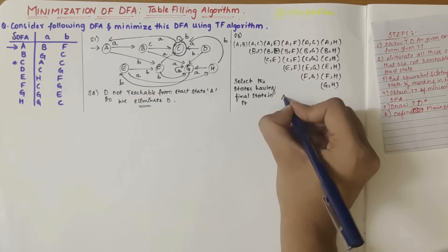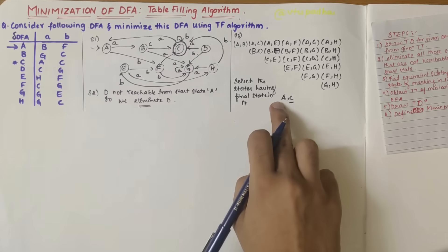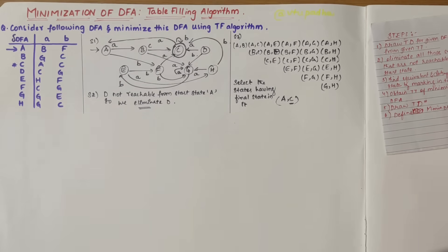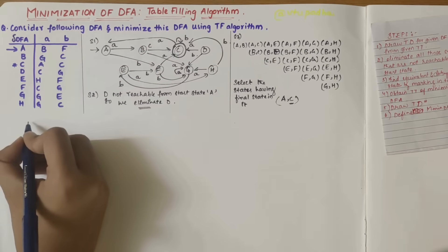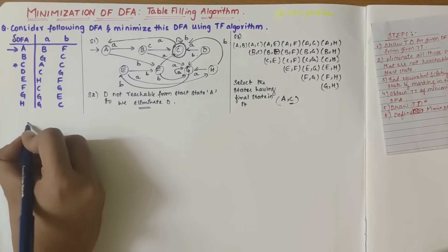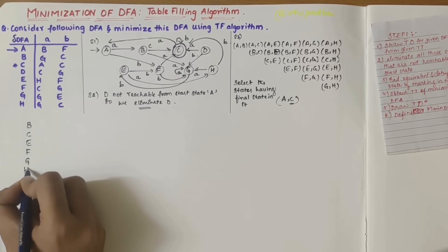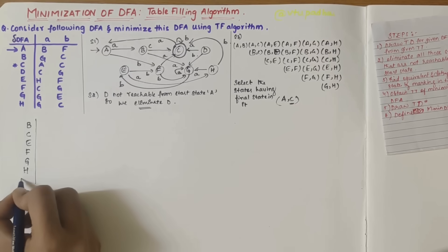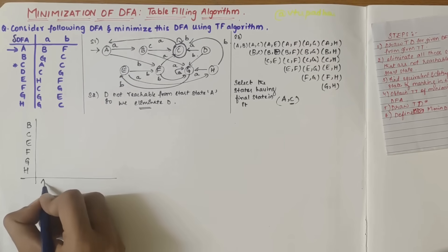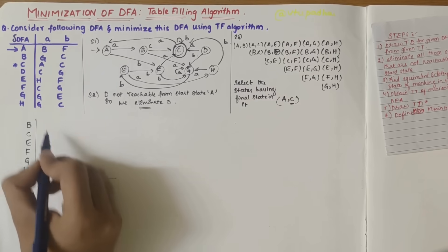Our next step is to select the combinations having exactly one final state in them — for example a-c, because c is a final state and a is not. We construct a table with states b, c, e, f, g, h on the vertical axis and states a, b, c, e, f, g on the horizontal axis, excluding d throughout.